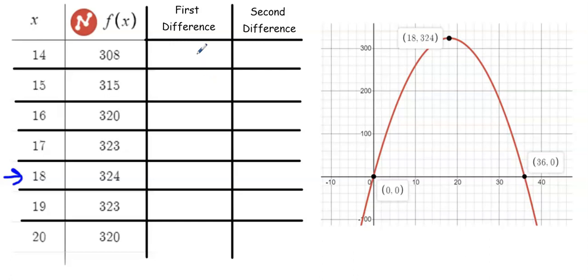Remember, quadratic functions should have a linear first difference and a constant second difference. So to get my first difference values, I do 315 minus 308. So here the function was going up by 7, and then it's going up by 5.